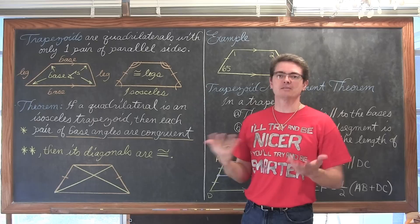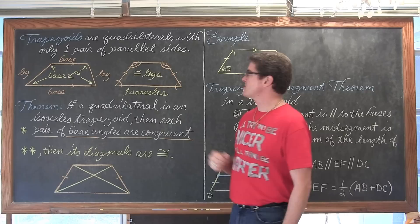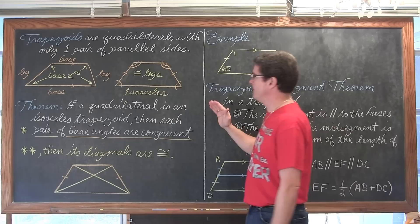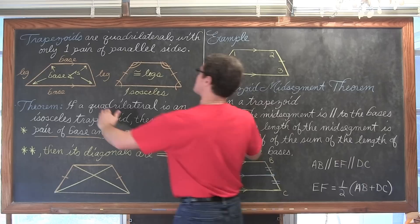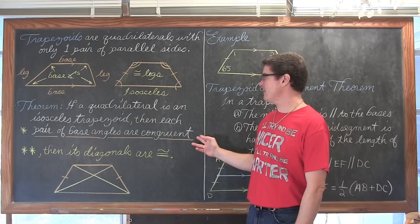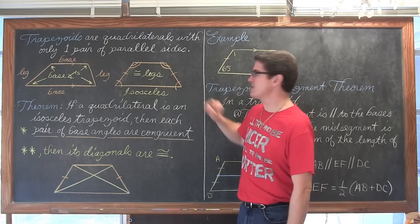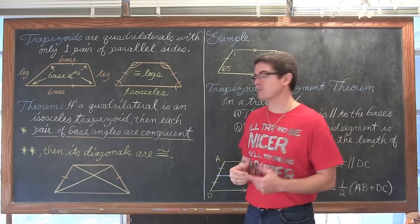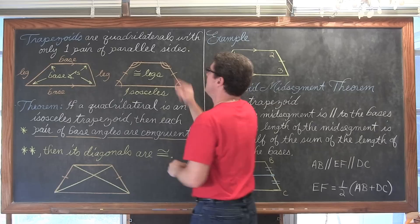Think of the isosceles trapezoid as an isosceles triangle that we just chopped the top off. In an isosceles triangle the base angles are congruent, and that same thing holds true here. If a quadrilateral is an isosceles trapezoid then each pair of base angles are congruent — the angles opposite the congruent legs are themselves congruent.